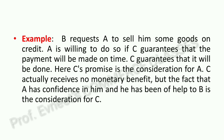For example: B requests A to sell him some goods on credit. A agrees but says he will sell on credit only if C guarantees that payment will be made on time. C gives the guarantee. Here, C's promise is the consideration for A. C actually receives no monetary benefit from giving the guarantee, but the fact that A has confidence in him and that B is helped by this — these are the considerations for C.